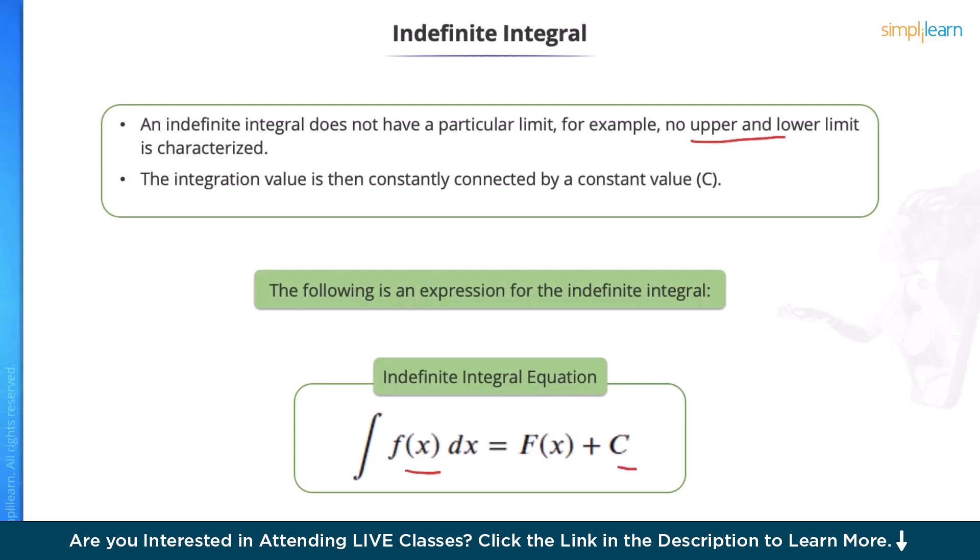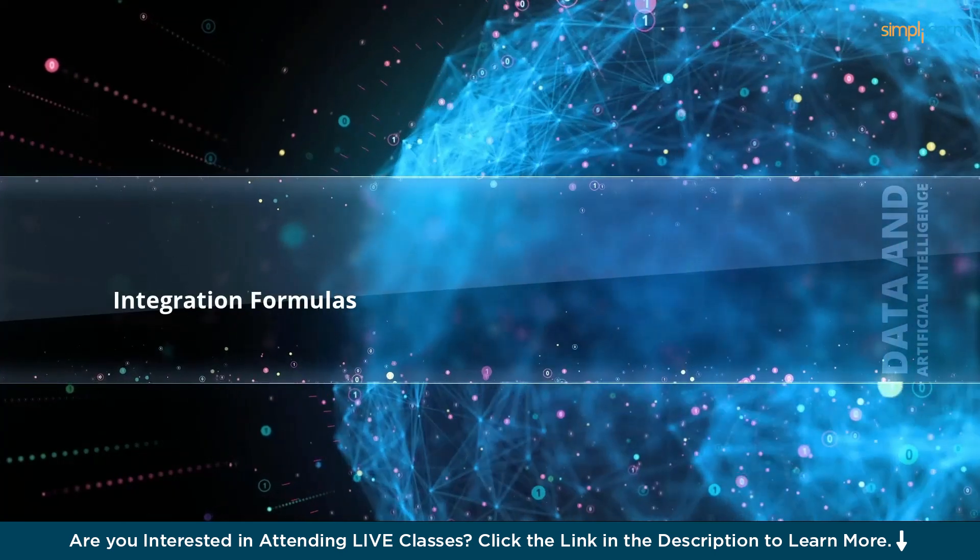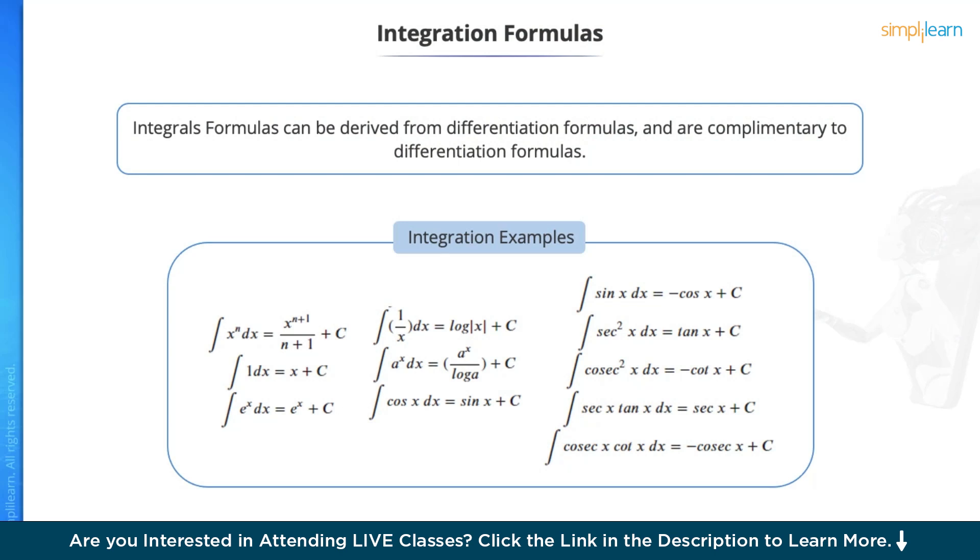Here, c is the constant of integration, which can be any real number and is considered as a constant function. Integration formulas: Integral formulas can be derived from differentiation formulas and are complementary to differentiation formula. For example, ∫x^n dx = x^(n+1)/(n+1) + c. ∫1 dx = x + c, or ∫e^x dx = e^x + c. The differentiation of sin(x) was cos(x). Hence, the integration of cos(x)dx is given as sin(x) + c. Here are few other examples of these integration formulas.